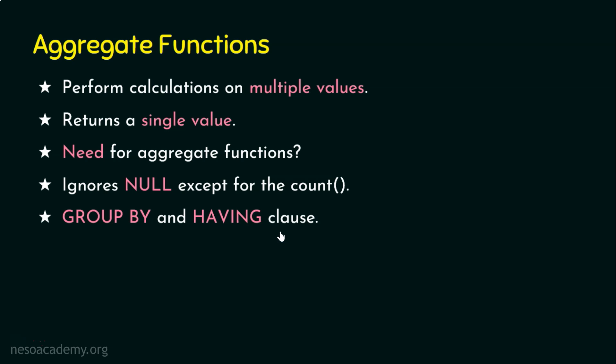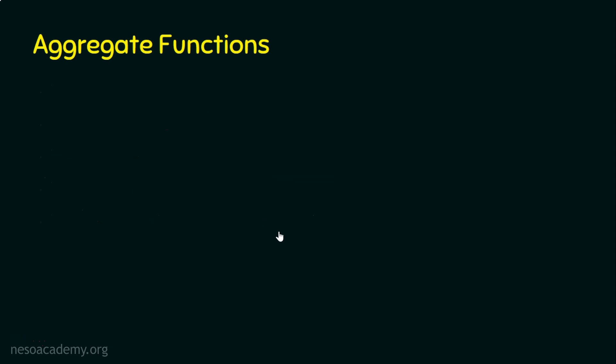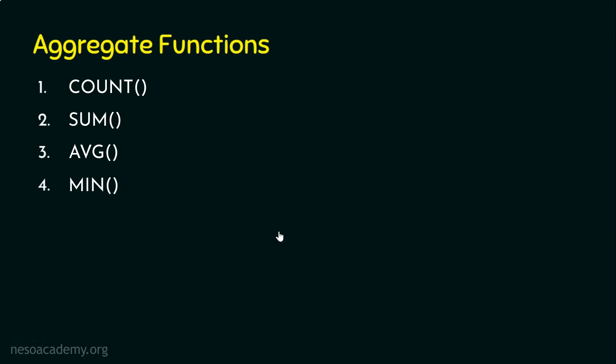We are done with the basics of aggregate functions. Let's see the various aggregate functions in SQL. There are five different aggregate functions: number one, COUNT; number two, SUM; number three, AVERAGE; number four, MINIMUM; and number five, MAXIMUM.